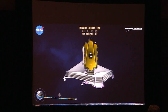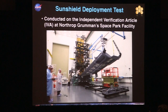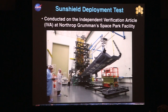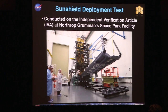Up until this year, that animation was pretty much all people had seen of how we're going to do this. Now I'll walk through the actual sunshield deployment test in more detail. This test is done on what's called an Independent Verification Article, located at Northrop Space Park facility. It's basically a full-scale JWST simulator designed to do sunshield deployment testing and also fit checks to make sure we understand how everything comes together and what the clearances are when stowing things.